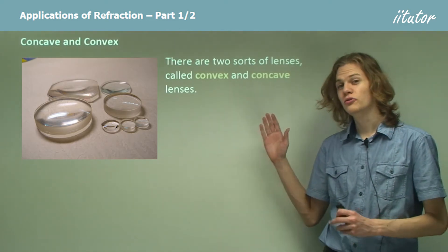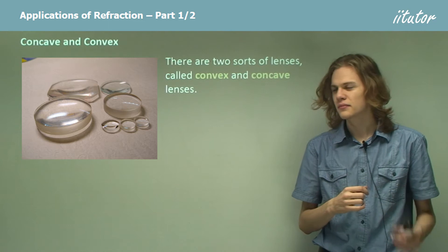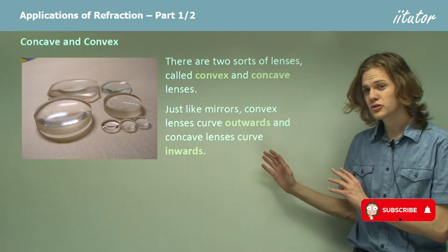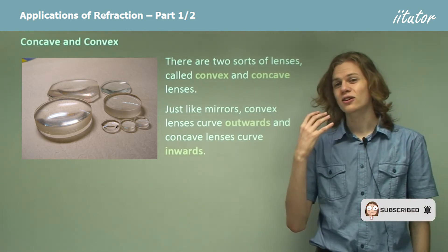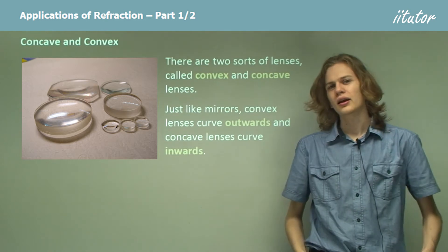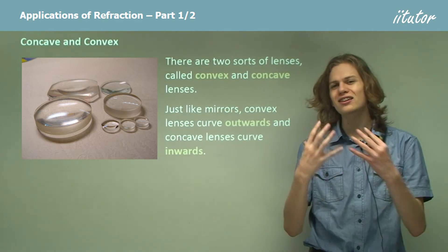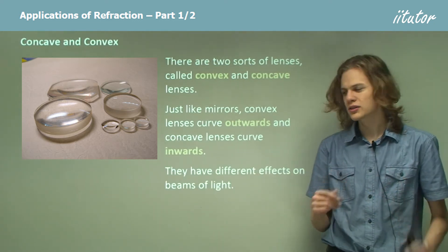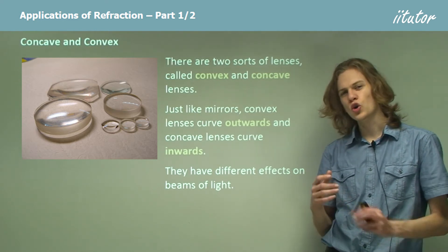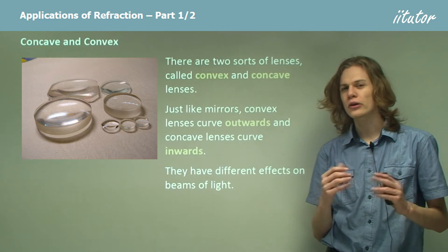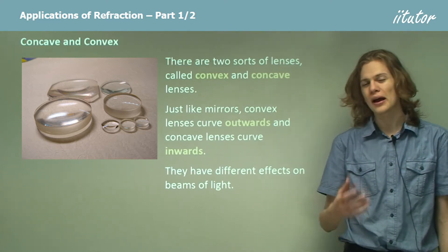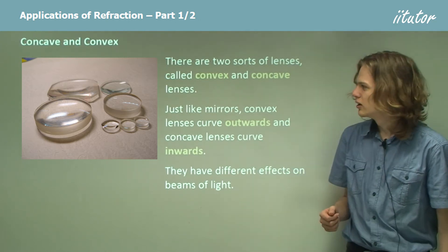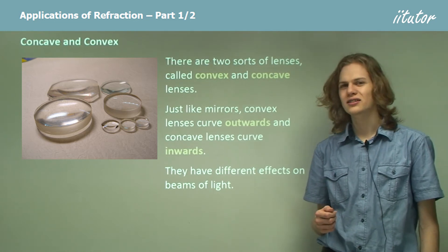Now just like curved mirrors, there are two different sorts of curved lens: the convex lens and the concave lens. Just like mirrors, if a lens is convex then it bulges outwards, and if a lens is concave then it bulges inwards. Both of them will have very different effects on how they interact with light. Concave mirrors could be used to magnify things, while convex mirrors could be used to have a very wide field of view.